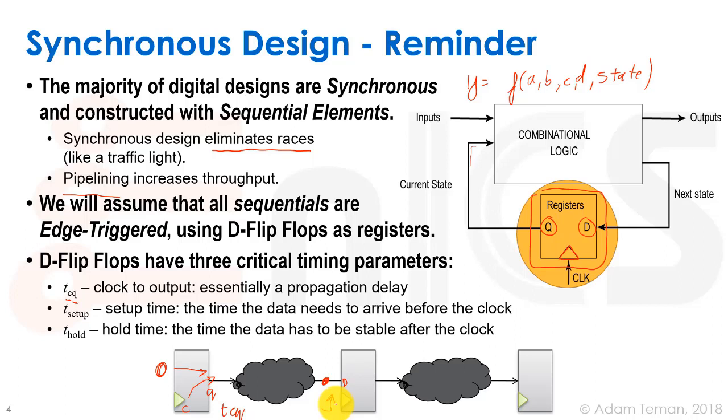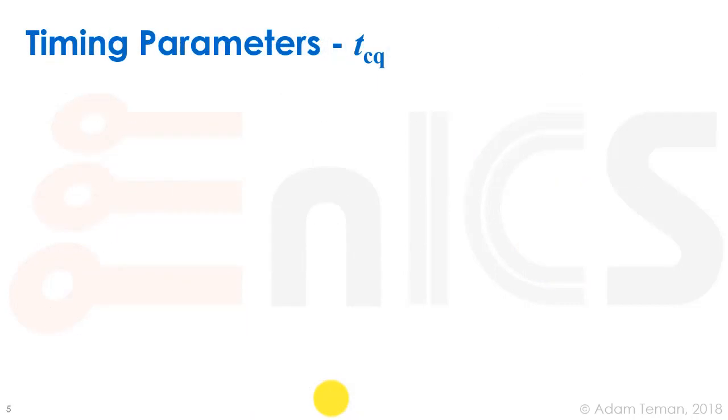And the fourth parameter is called t hold, the third parameter excuse me is called t hold, which is the amount of time that we have to keep our data stable here at the input to the flip-flop before we have the next timing edge. I'll discuss that in more detail in the following slides.